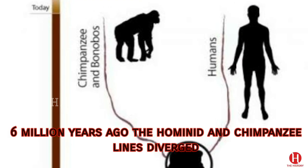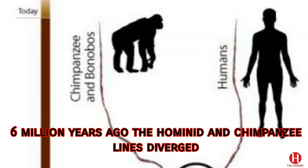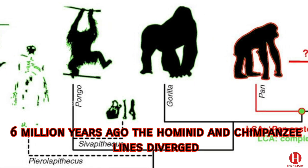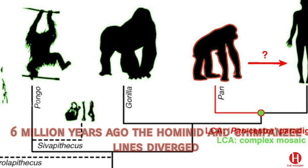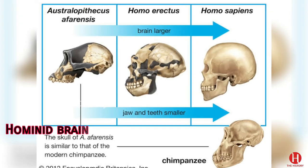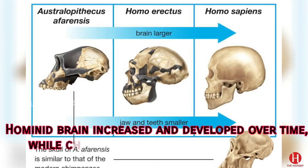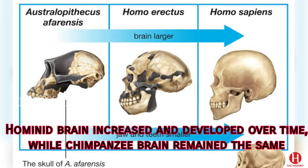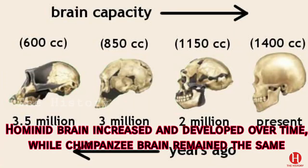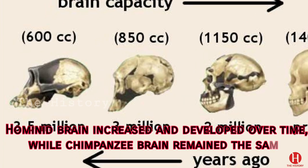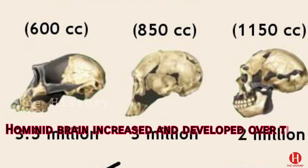Because 6 million years ago the hominid and chimpanzee lines diverged. The size of the hominid brain increased and developed over time, while the chimpanzee brain remained the same.